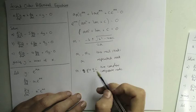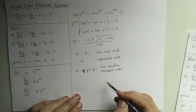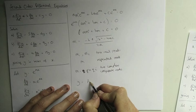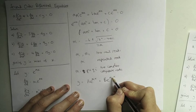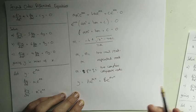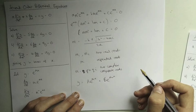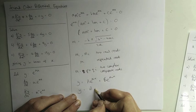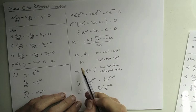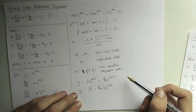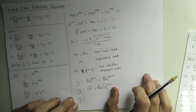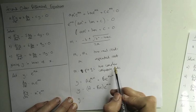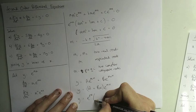Depending on which case you're in, you write y differently. In the first case — two distinct real roots — the solution is y = Ae^(m₁x) + Be^(m₂x), combining both roots with unknown constants A and B, similar to the constant of integration you get when solving by integration. In the repeated root case, the solution is y = (A + Bx)e^(mx). The Bx term might seem strange, but we'll accept it for now.